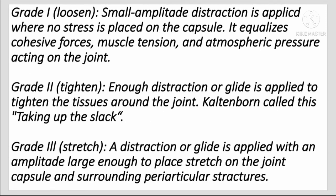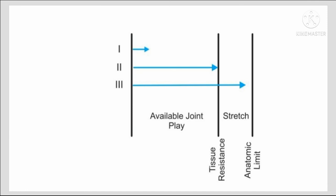Dosage grades for distraction: Grade 1 (loosen) — small amplitude distraction with no stress on the capsule; it equalizes cohesive force, muscle tension, and atmospheric pressure acting on the joint. Grade 2 (tighten) — enough distraction or glide to tighten the tissues around the joint, taking up the slack. Grade 3 (stretch) — distraction or glide with amplitude large enough to stretch the joint capsule and surrounding periarticular structures.